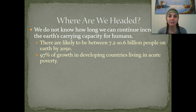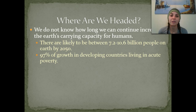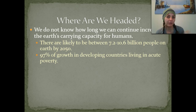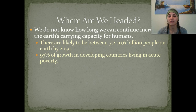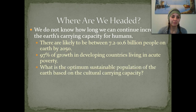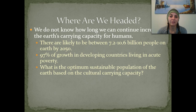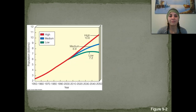There is a huge difference between living in acute poverty in a developing country versus a developed country like the United States. So what is the optimum sustainable population of the Earth based on, and what is the cultural carrying capacity?